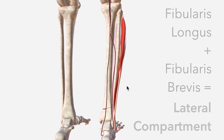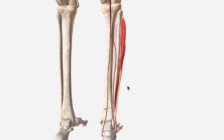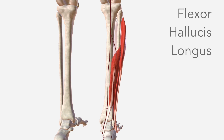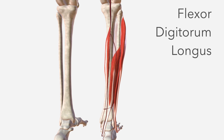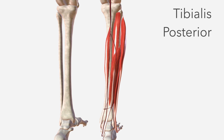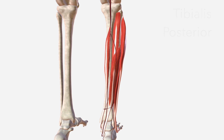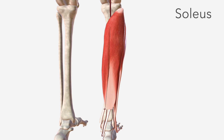It also supplies the deep muscles of the posterior compartment — flexor hallucis longus, flexor digitorum longus, and tibialis posterior — as well as the soleus muscle, which is considered one of the superficial muscles of the posterior compartment.